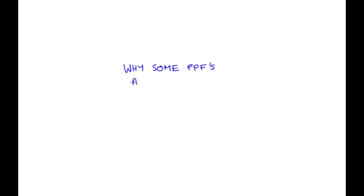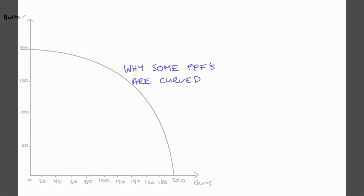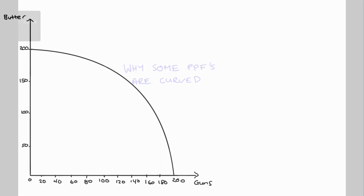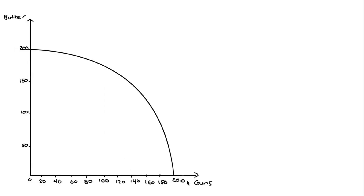Hi everyone. In this video I'm going to look at why some production possibility frontiers — that's PPFs — are curved. The video will concentrate on this PPF here, which represents an economy that can only make guns or butter.